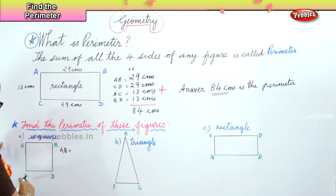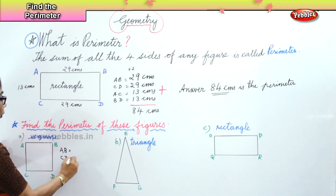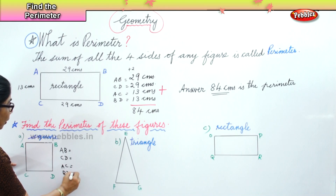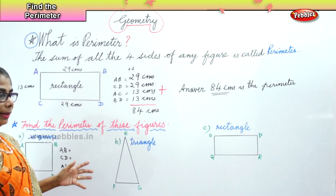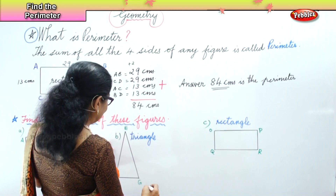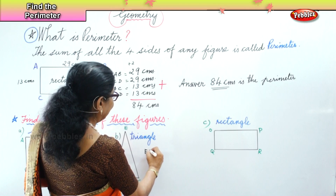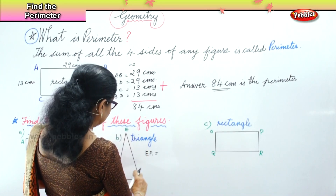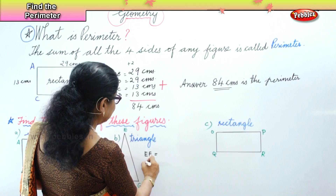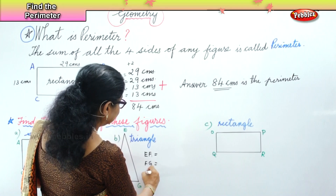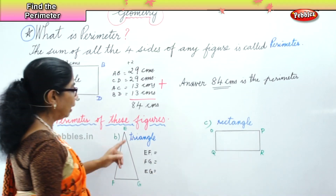AB equals how much? Then CD, how much? We are going to measure AC and BD — you just have to add them all. Then here in the triangle we are going to measure EF, then FG, then EG, and that will give us the perimeter. Add all of these.